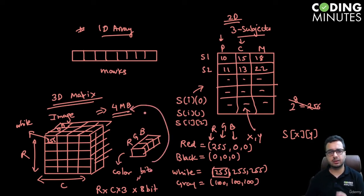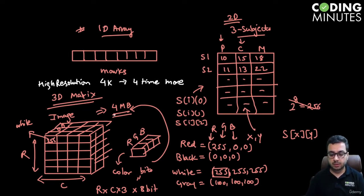A higher resolution image basically means you have more number of rows and columns. A 4K image would occupy four times more space on your SD card because the number of pixels have also increased by that factor. If both rows and columns are increased by four times, it would occupy 16 times more space on your SD card.